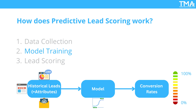Next is model training. This is where machine learning comes into play. Your predictive lead scoring model uses historical data to identify patterns and correlations between different data points and conversion rates. The model learns which lead attributes, like engagement level or company revenue, are most likely to predict a successful sale. For example, if the model identifies that leads from tech companies with over 500 employees who have engaged with your pricing page have a higher likelihood of converting, it then weights these factors more heavily in the lead scoring process.